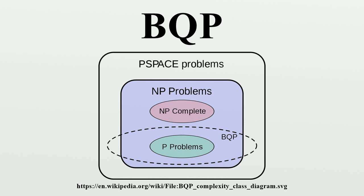Informally, this is true because polynomial time algorithms are closed under composition. If a polynomial time algorithm calls as a subroutine polynomially many polynomial time algorithms, the resulting algorithm is still polynomial time.